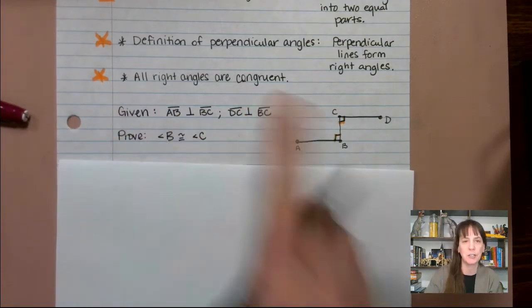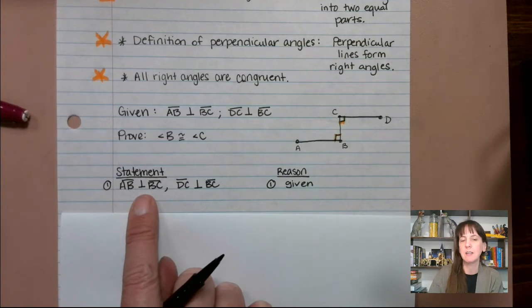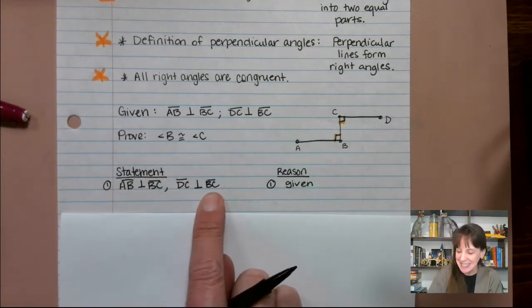And this is that all right angles are congruent. That's what we're trying to prove here. So of course, we write down our givens. AB is perpendicular to BC, or I'm sorry, is perpendicular to BC, and DC is perpendicular to BC.